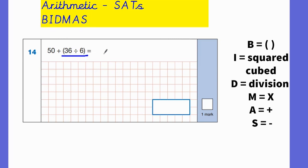Here we're going to do the sum within the brackets first because that's the B for BIDMAS. So 36 divided by 6 is going to be 6. Then the only other part I have to do is the addition. So I'm going to do 50 and add that to the 6, which makes 56. So that would be our correct answer for that question, 56.